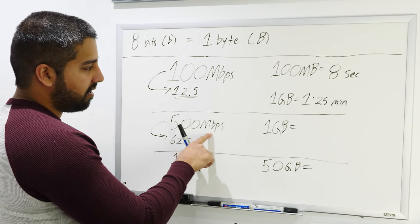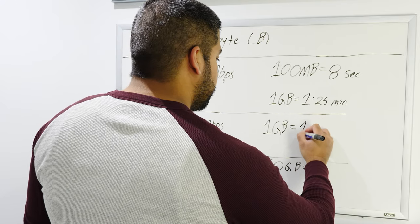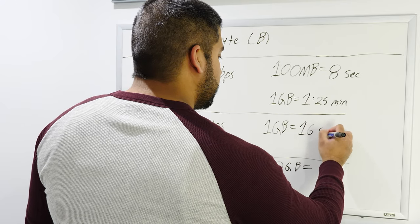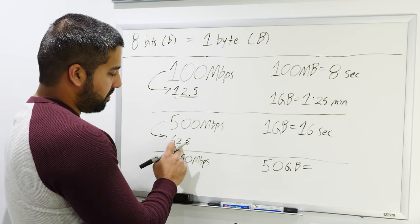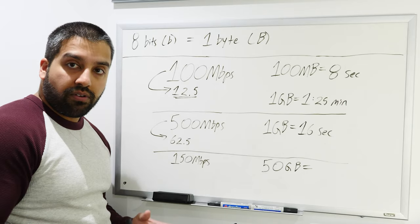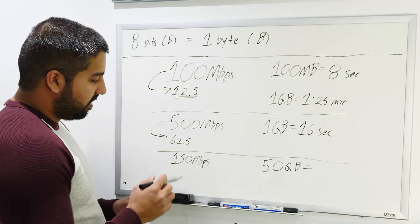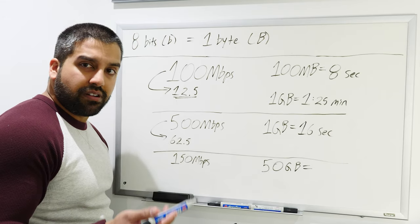So let's say I have this connection speed and I want to download a one gigabyte file. Well, how long would it take me? Well, okay, using that calculation, it'll take you 16 seconds. So this divided by this will equal to 16 seconds. Pretty simple.